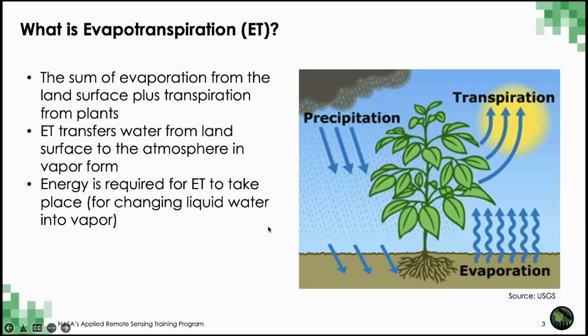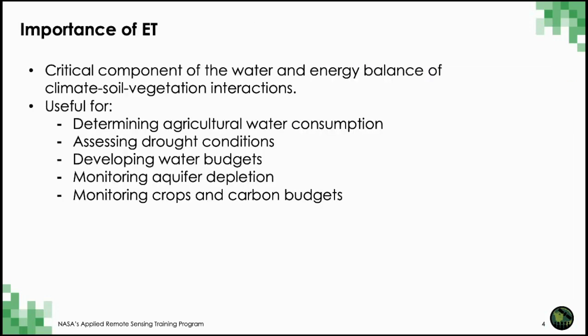What is evapotranspiration? It is the sum of evaporation from land surface and transpiration from plants. ET transfers water from the land surface to the atmosphere in vapor form and requires energy to convert liquid to vapor. ET is a critical component of the water and energy balance of climate-soil-vegetation interactions, and is useful for determining agricultural water consumption, assessing drought conditions, developing water budgets, monitoring aquifer depletion, and monitoring crops and carbon budgets.